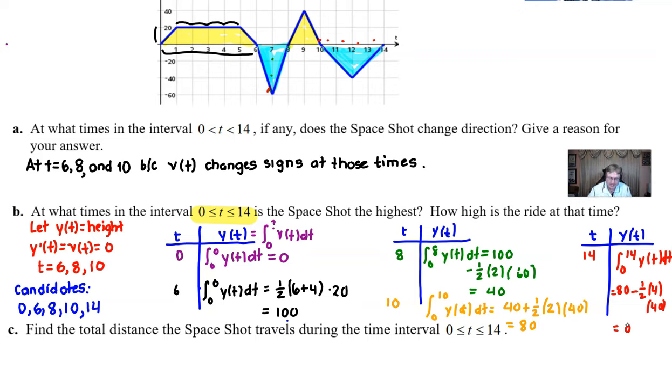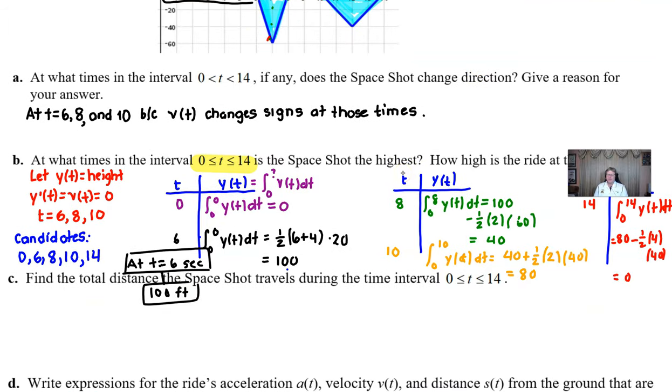So that kind of makes sense logically. So at what times is the space shot the highest? The answer would be at time t equals 6 seconds. And all of your work is there. How high is the ride? We'll say 100 feet. And I know I'm infringing a little bit on part C there. Part B is definitely the most time-consuming part here. I think the rest of these will go a little faster.